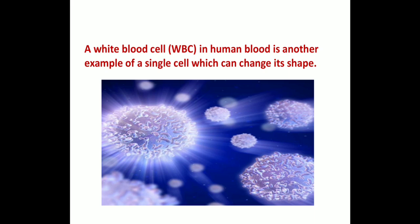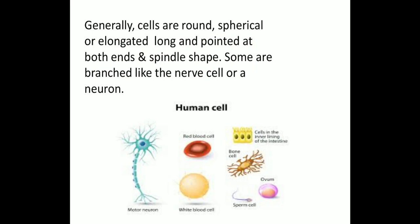Generally, we see different types of cells — some are round, spherical, elongated; some are long and pointed at both ends, and some exhibit a spindle shape. Even the nerve cell is quite long with a cell body on it. The nerve cell receives and transfers messages, thereby helping to control and coordinate the working of different parts of the body.